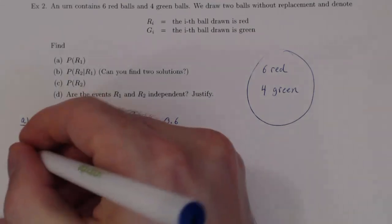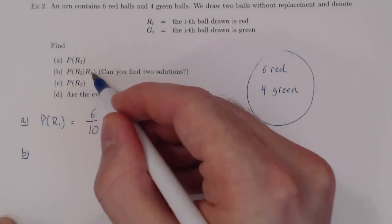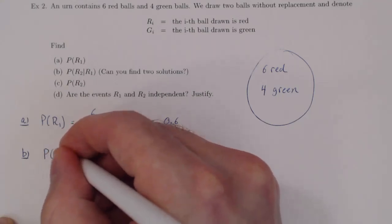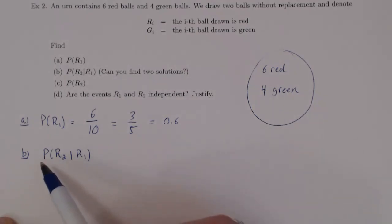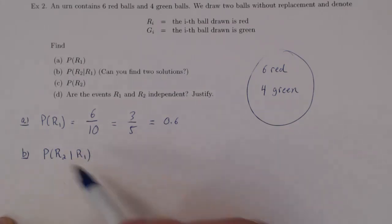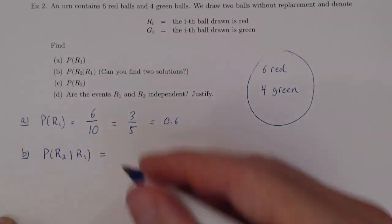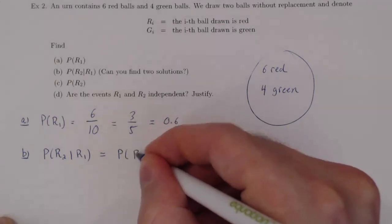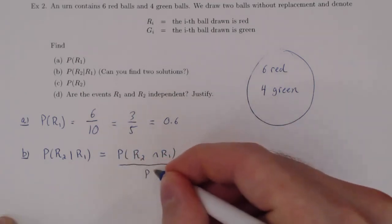Let's look at part B now. In B we're finding P(R2 | R1), and now we have a conditional probability. This is asking: given that the first ball selected was red, what is the probability of the second ball being red? Let's find this in two different ways. Let's first start with the definition of conditional probability. This is P(R2 ∩ R1) over P(R1).